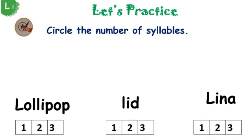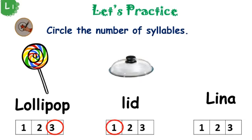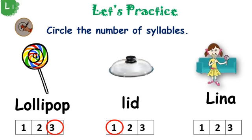Now let's circle the number of syllables in each word. Don't forget, kids, that we have to clap when we say each word. Let's start with the word lollipop — lo-li-pop. How many syllables are there? It is three syllables. Now let's try the word lid — just one syllable. Now let's try Lina — Li-na. How many syllables are there? It is two syllables. Great job, kids. Well done.